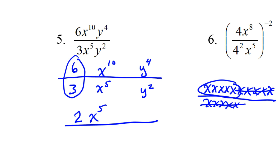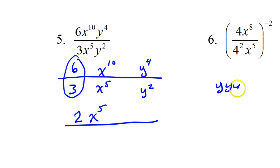Same thing with the y's. y to the fourth power, in your mind you should be picturing y, y, y, y over y, y. So these two y's are going to cancel out two of these y's. That's going to leave y squared in the numerator. So really, this is the final answer right here.